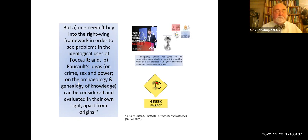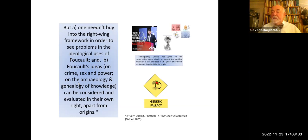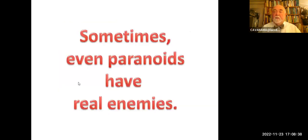Foucault's ideas — and he has a number of interesting ideas on crime, on sex and power, the archaeology and genealogy of knowledge — these can all be considered and evaluated in their own right, quite apart from their origins. I mentioned Pluckrose and Lindsay's book as worthwhile reading. I would also mention Gary Gutting's book on Foucault in the Very Short Introduction series from Oxford Press — which is a very good series for getting up to speed on complex issues. Gutting's book is a particularly good one in that series; he'll give you a very cogent rundown of Foucault. You don't have to buy any political point of view to see what you might want to read.